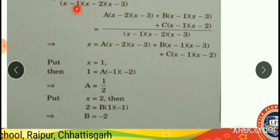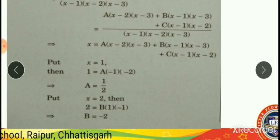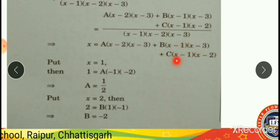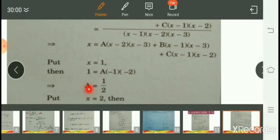Using the first linear factor x-1: consider x-1=0, means x=1. Put x=1 in the identity. When x=1, the b term becomes b(1-2)... wait — the b coefficient becomes 0, and the c term is also 0. On the left, x=1; on the right, we get a(1-2)(1-3) = a(-1)(-2). Therefore, 1 = 2a, giving a equals 1/2.